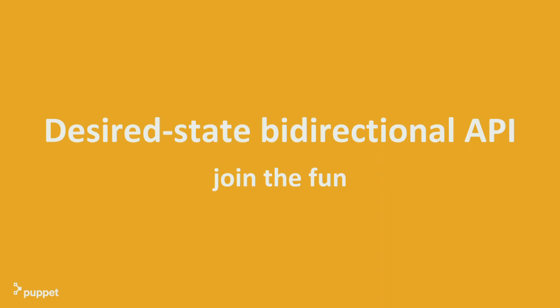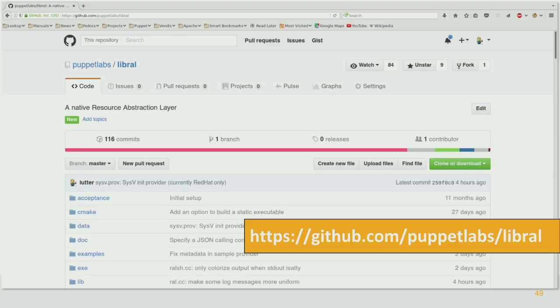If you forget everything else, the high-level message of LibRAL is that it's a desired state and bi-directional API — meaning enforce change and learn something about a system at the same time. I'd love for people to join the fun. Here's the link to the GitHub repo, and the README on that repo has a link to the tarball I just used if you want to play with it.